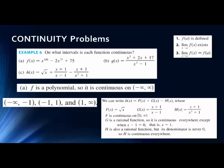For part C, we have a function H(x) that we can break into sub-functions. If we set the first piece as the square root of x, that's a radical, and we cannot take the square root of a negative number. So this first part is continuous on zero to infinity — x has to be zero or greater.